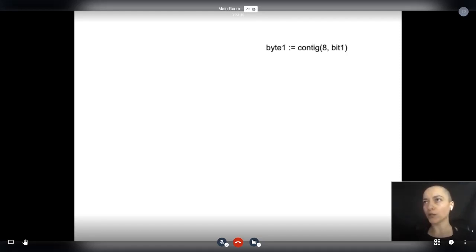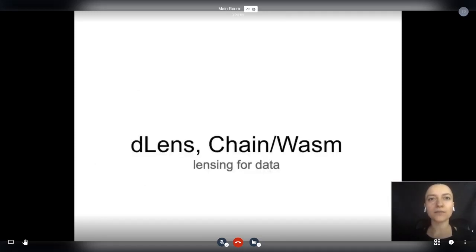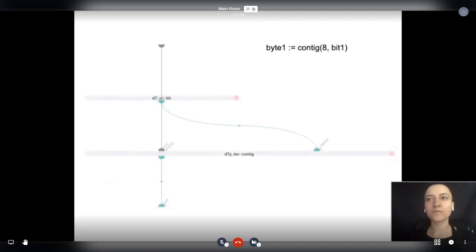This is how byte one can be represented. It receives bit one as input which is repeated a given number of times, in this case 8. This was the diagram I'm not sure if you saw it earlier.